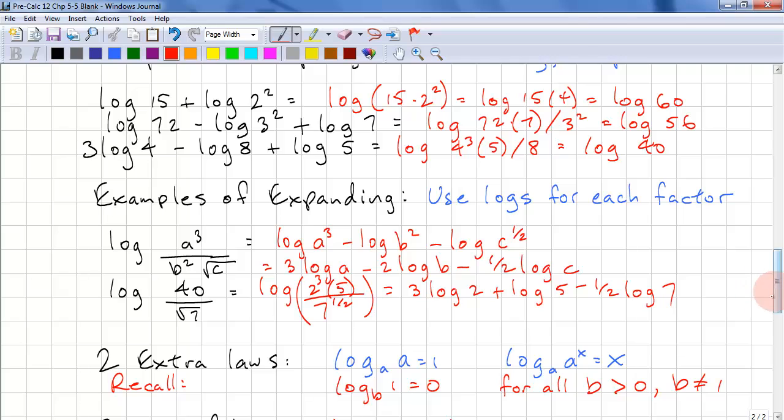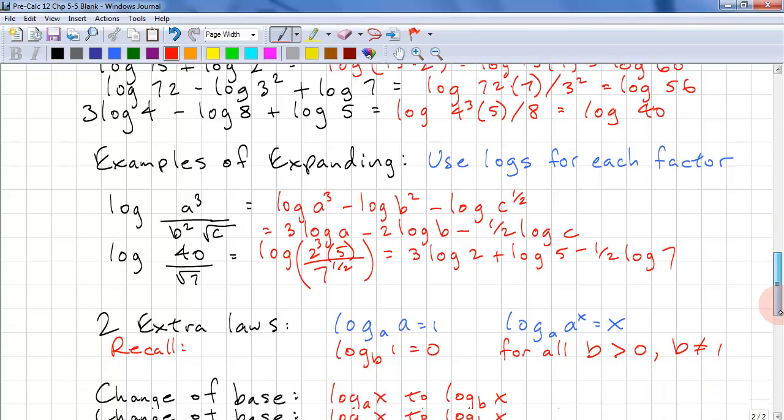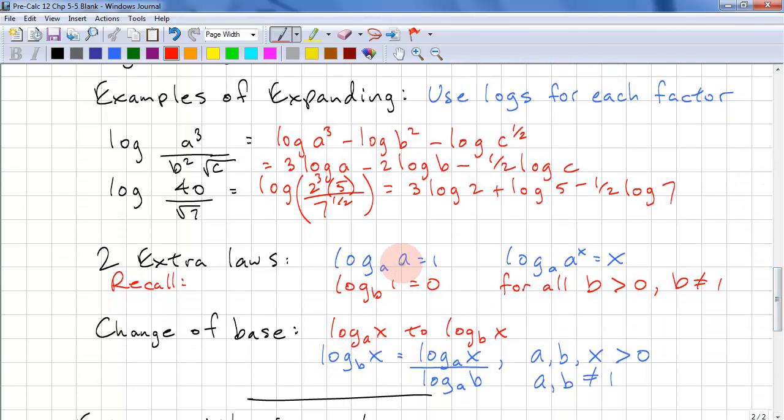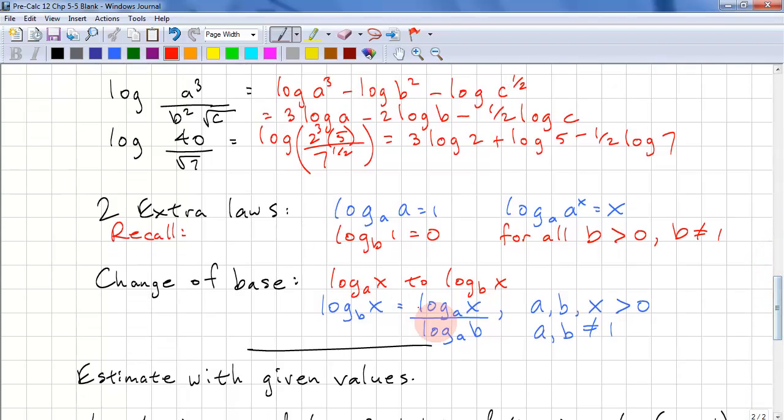Here's 2 extra log laws that will help you. Log a of a equals 1. Log a of a to the power of x simply equals x. And I gave you this one before, but we'll give it to you again to help you remember. Log b of 1 equals 0. And that's for all b greater than 0, and b does not equal 1.